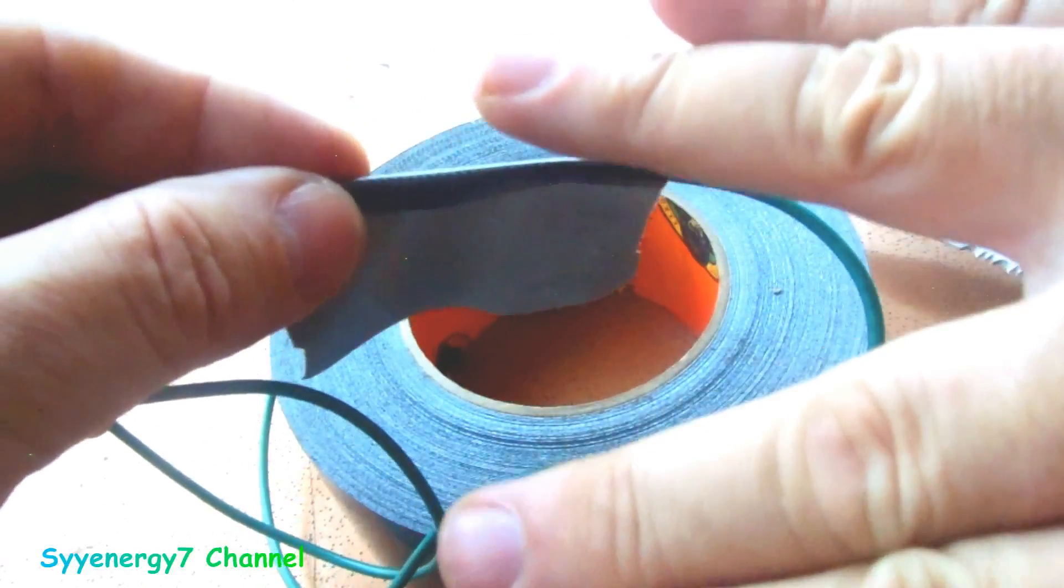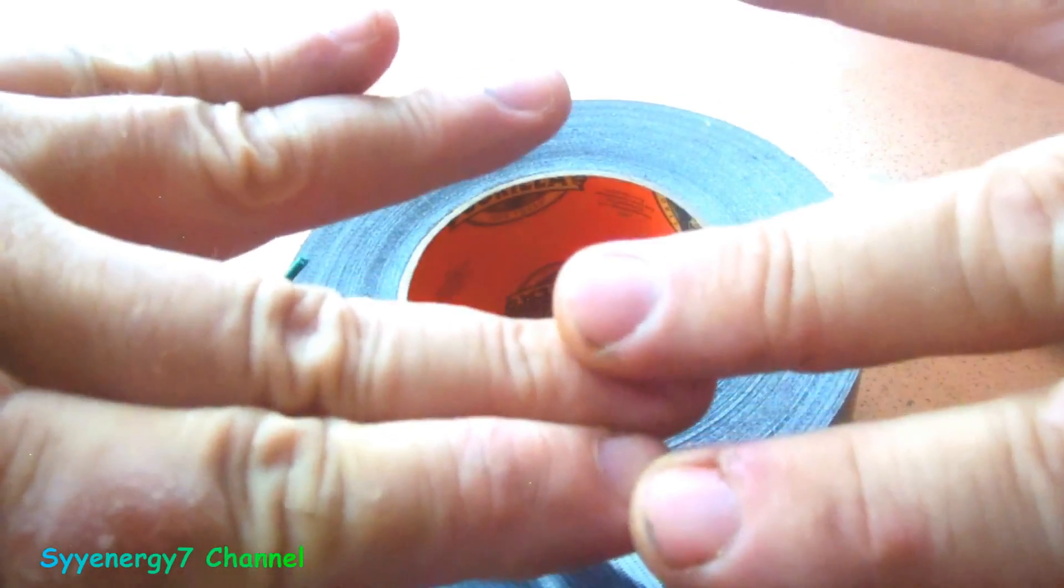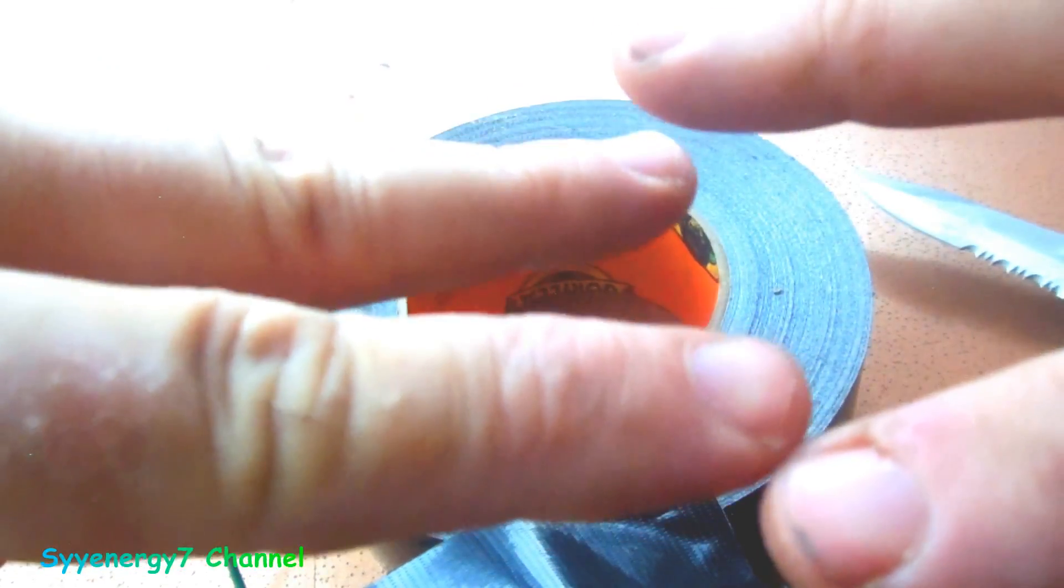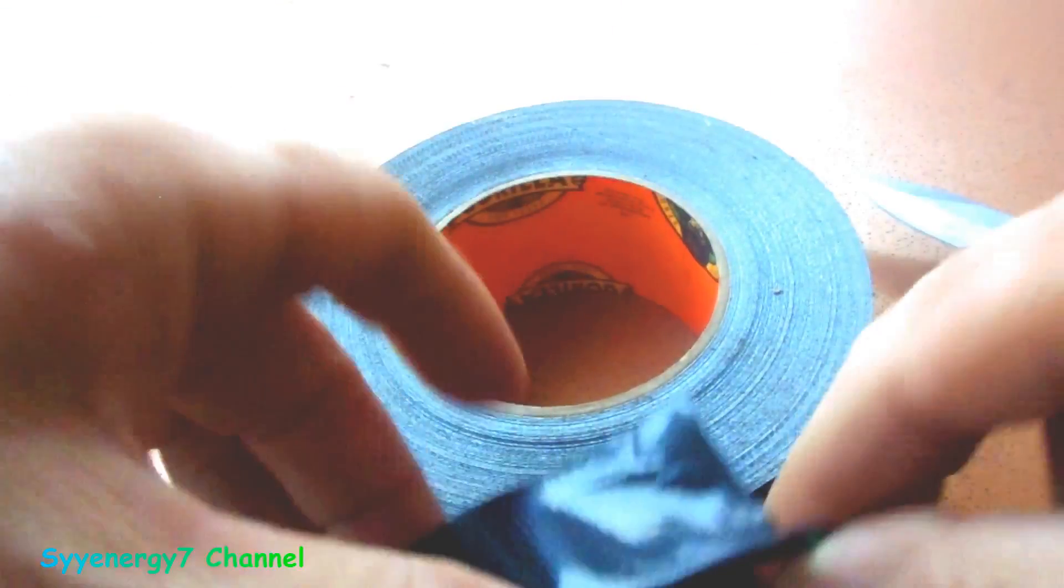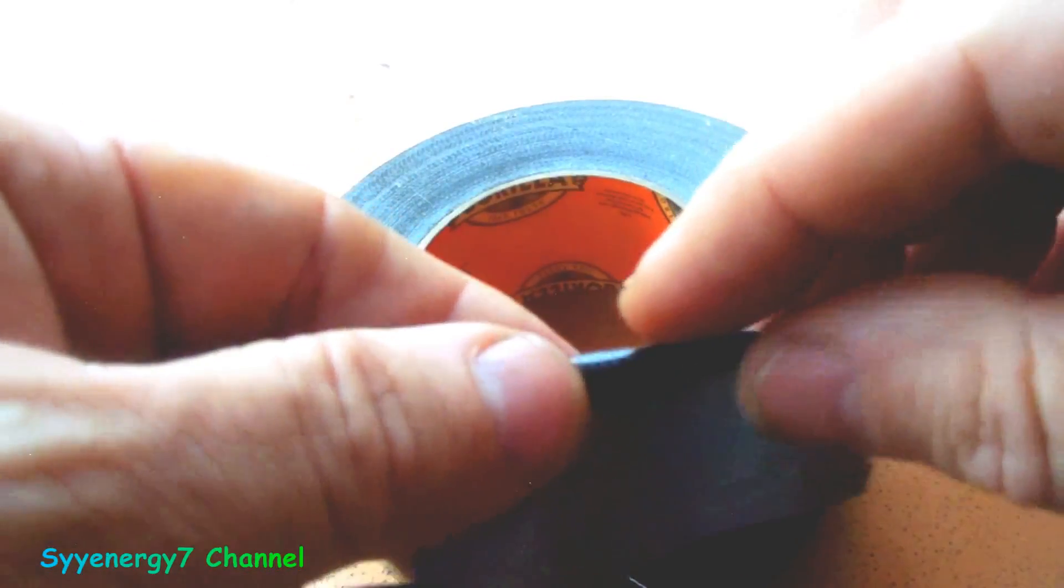Two pigtails like that. Twist all these strands together, twist all these strands together. And then when you have just two strands grouped together, then just wrap those around. Then the Gorilla tape—I always call it the monster tape.